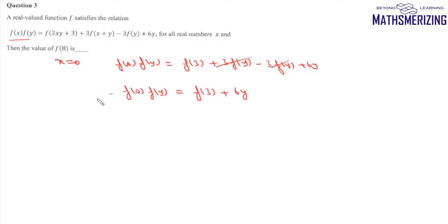Now we'll put y = 0 in the expression, which gives us f(0)² = f(3). Let f(0) = k, so we can write kf(y) = k² + 6y. Therefore, f(y) = (k² + 6y)/k.